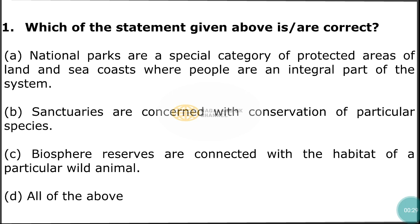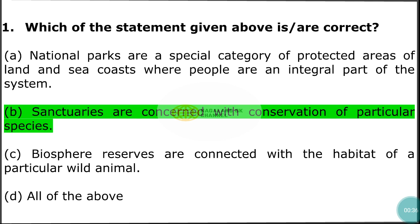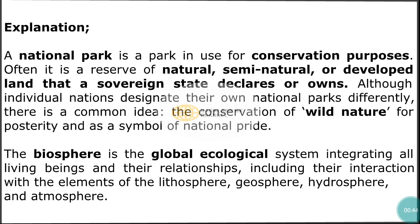Question number 1: Which of the following statements is incorrect? The correct answer is option B — sanctuaries are concerned with conservation of particular species. A national park is a park used for conservation purposes, often a reserve of natural, semi-natural, or developed land that a sovereign state declares or owns. There is a common idea: the conservation of wild nature for posterity and as a symbol of national pride. The biosphere is the global ecological system including all living beings and their interactions with the lithosphere, geosphere, hydrosphere, and atmosphere.